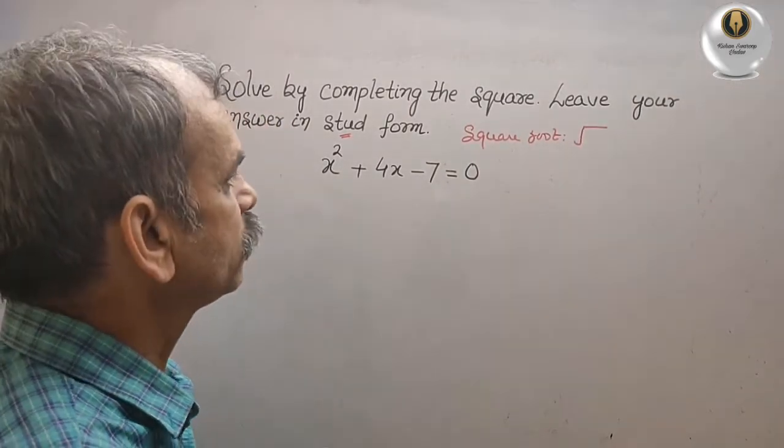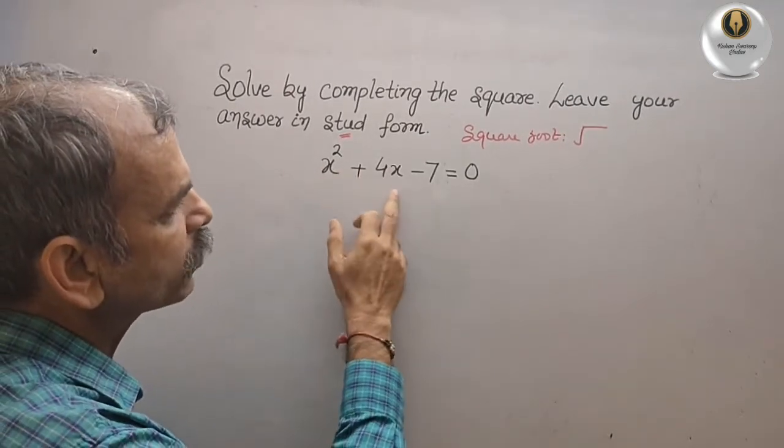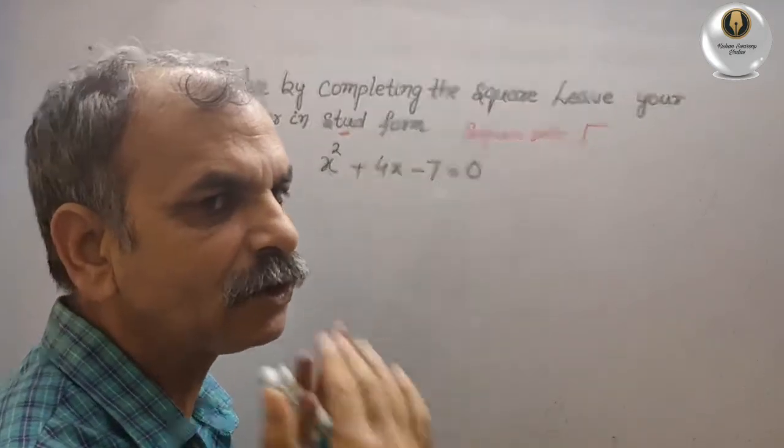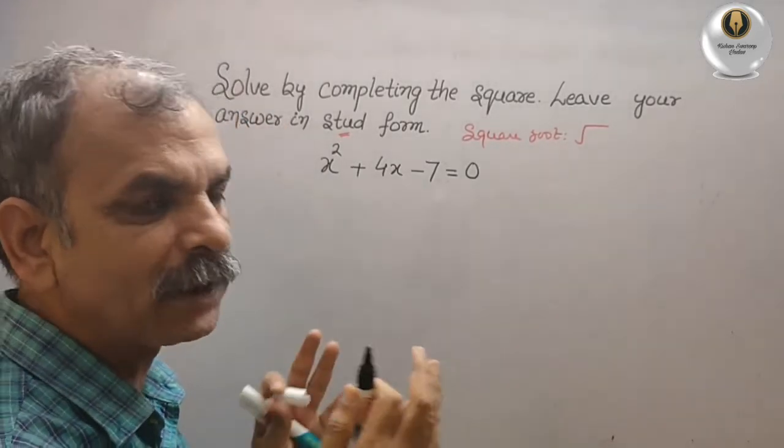Now we will solve this. They have given you x² + 4x - 7 = 0. First, what we have to see is the middle terms, up to the middle terms we have to see.